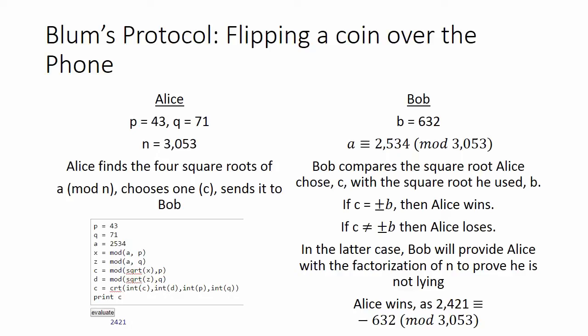Next, Alice computes n equals p times q and sends n to Bob. Thus, in our example, n is equal to 3,053.